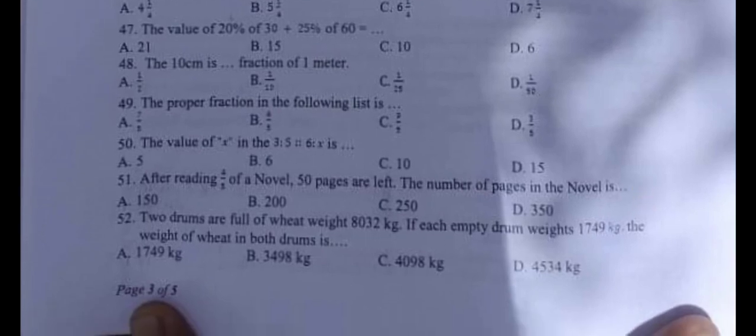Question number 51: After reading 4 upon 5 of a novel, 50 pages are left. The number of pages in the novel is, and the correct answer is C, 250 pages.